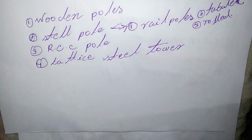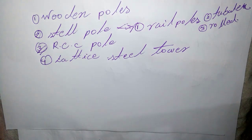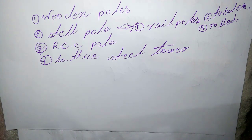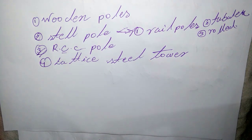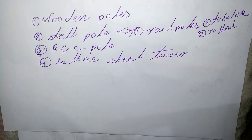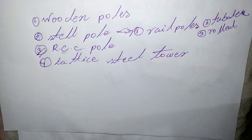RCC poles, that is reinforced concrete poles, have become very popular as line supports in recent years and are mostly used today. Their main advantages are great mechanical strength, longer life, and they permit longer spans than steel and wooden poles.